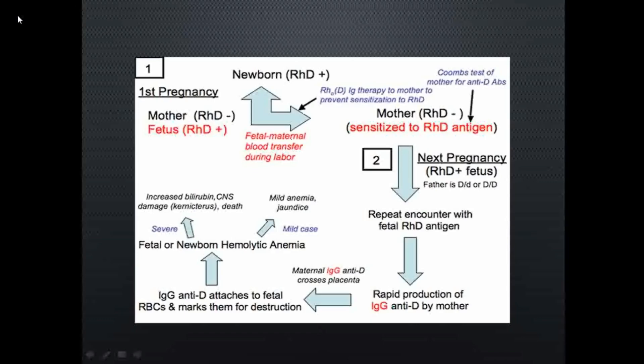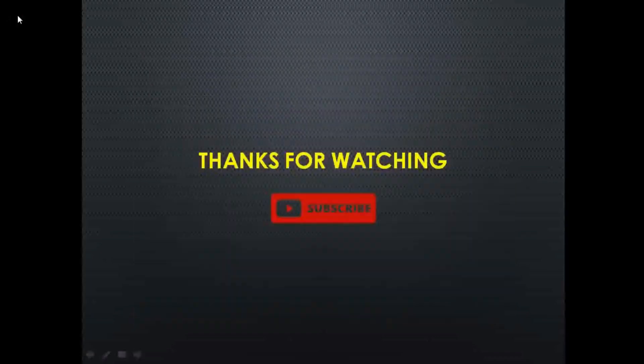If the hemolytic problem is mild it may result in mild anemia or jaundice, but if more severe it can result in increased bilirubin, central nervous system damage, or even death. In this way, incompatibility of the Rh or D antigen results in the severe condition called erythroblastosis fetalis. I hope you understand this topic well — if you like this video please share and subscribe to the channel. Thanks for watching!